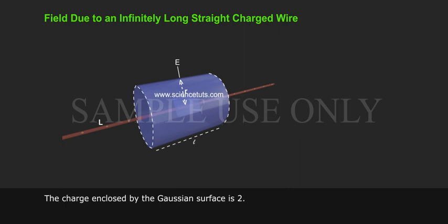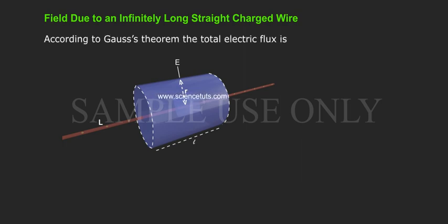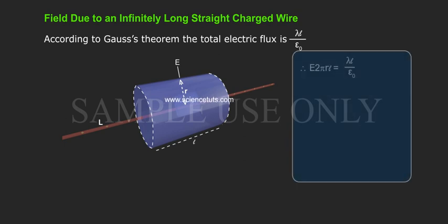The charge enclosed by the Gaussian surface is λL. According to Gauss's theorem, the total electric flux is λL/ε₀. Therefore, E·2πRL = λL/ε₀.